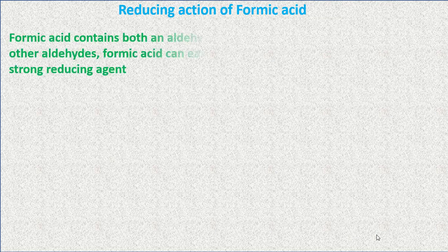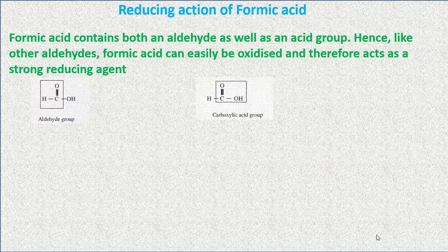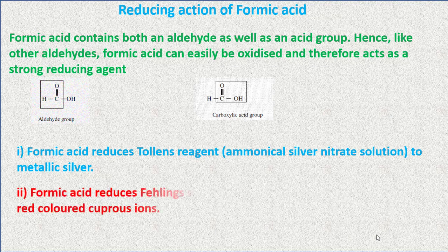Reducing action of formic acid — this is a very important question. Formic acid contains both an aldehyde group as well as an acid group. Hence, like other aldehydes, formic acid can easily be oxidized and therefore acts as a strong reducing agent. The structure of formic acid contains both an aldehyde group and a carboxylic acid group. For example, formic acid reduces Tollens' reagent to metallic silver.